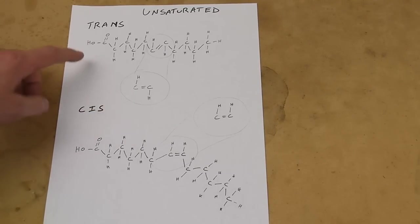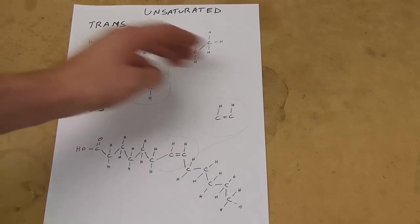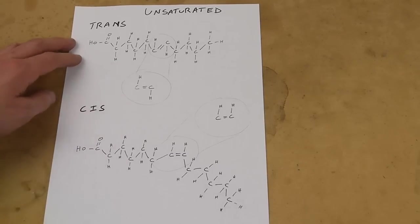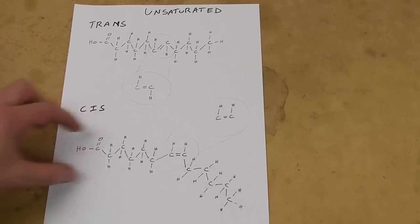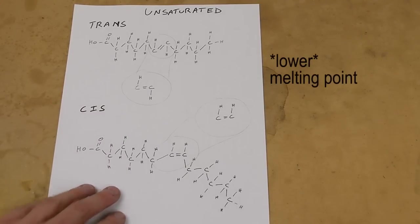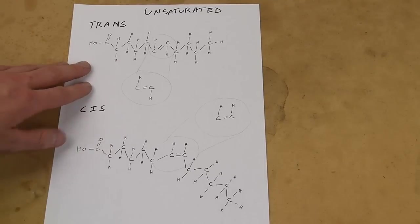When they're opposite, this is called a trans fatty acid, and it makes the chain kind of straight again—there's actually a slight kink, sort of like a step over, but it's mostly straight. Whereas if the hydrogens are on the same side, we get this kink and all the health benefits that we talked about of having a higher melting point oil apply.